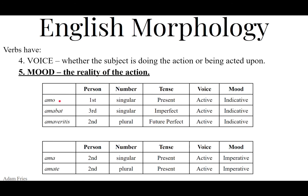For instance, if I were to ask: what are the person, number, tense, voice, and mood of AMO? You would look at AMO — I love — and say that it is first person singular, present tense, active voice, indicative mood. For AMABAT: third person singular, imperfect, active, indicative. And AMABITIS: second person plural, future perfect, active, indicative.